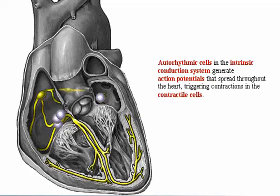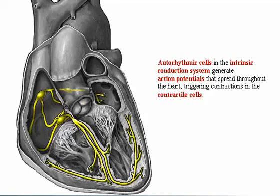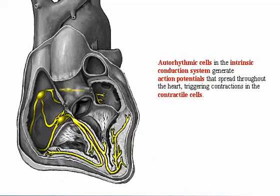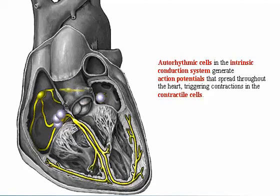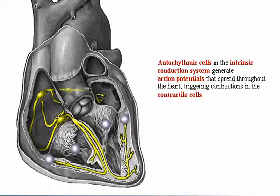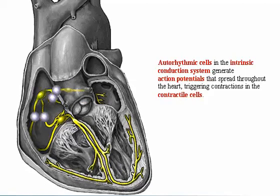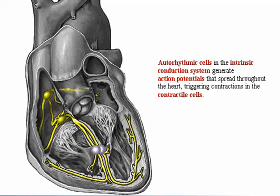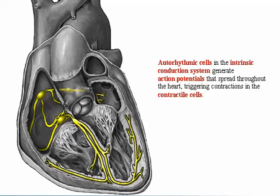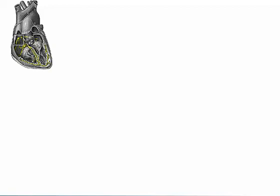Cardiac autorhythmic cells in the intrinsic conduction system generate action potentials that spread in waves to all the cardiac contractile cells. This action causes a coordinated heart contraction.